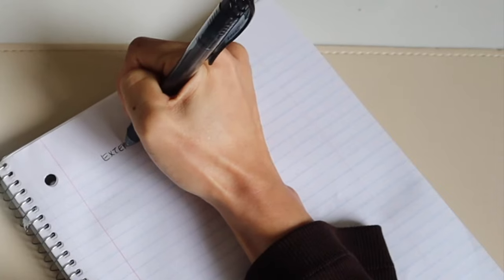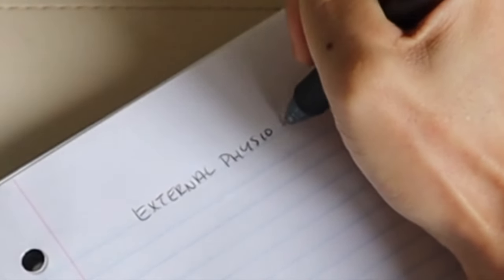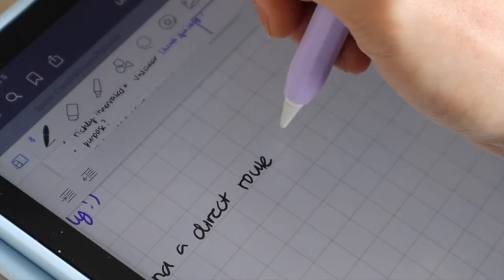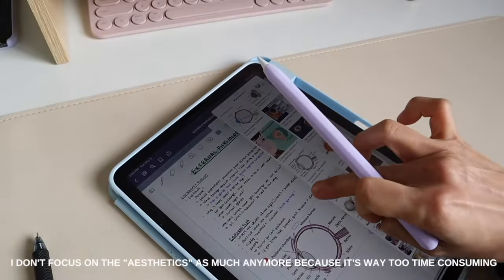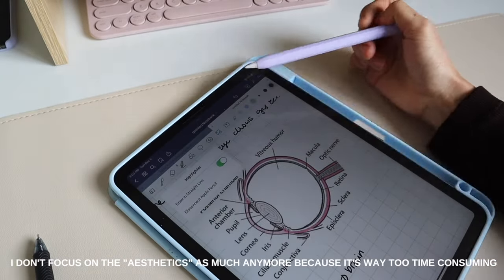Whereas in paper notes, once it's written down, there's finality and you can't really change it back. So I think this is why I found that in the beginning of this digital note-taking journey, I was spending a bit more time trying to make my notes more aesthetically pleasing.